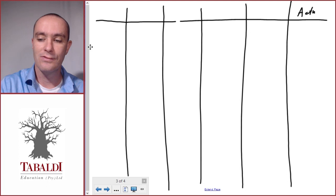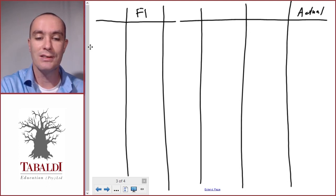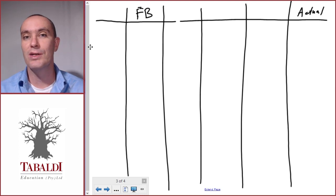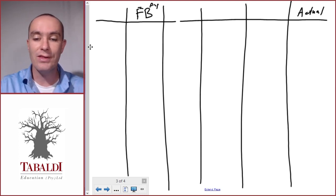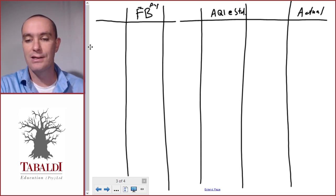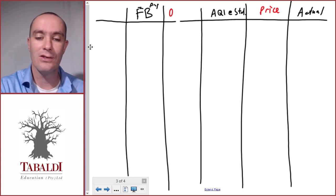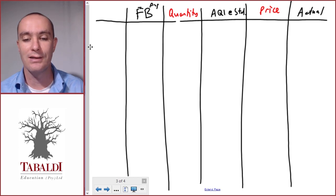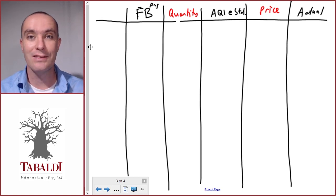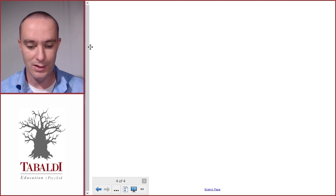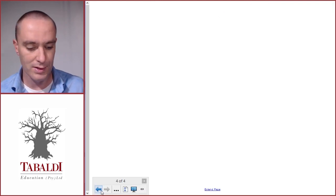We have the actual values on the right-hand side and we need the flexible budget on the left-hand side. The flexible budget uses the standard cost card but with actual units produced — always actual units produced. In the middle we have the column called 'actual quantity of input at standard.' The price variance sits on the right and the quantity variance on the left, with quantity variances covering efficiency variances for overheads and labor.